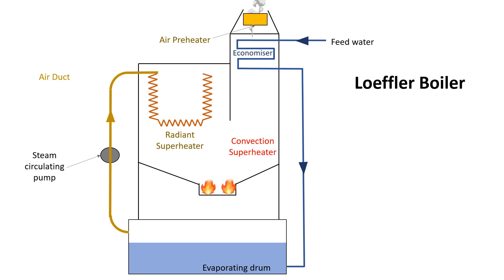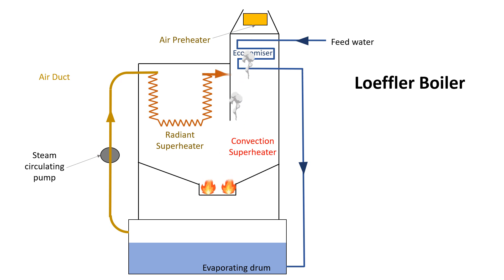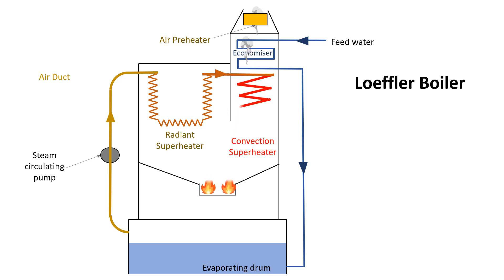A radiant superheater is placed directly in the radiant zone of the combustion chamber, so it has the heat absorbed by the radiation. And then it is passed through the convective superheater, which is located in the path of hot flow gases, so the means of convection superheater which transfer the heat from hot flow gases to the steam.